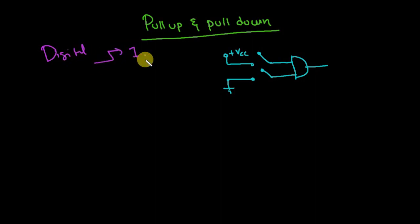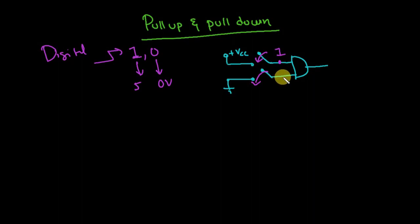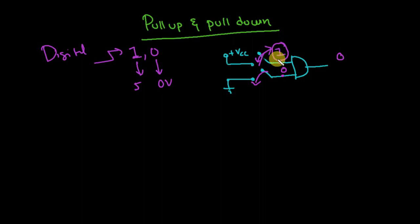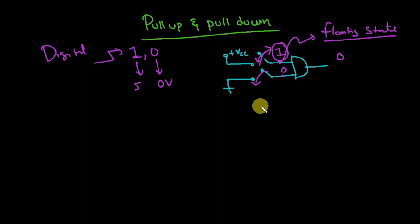Logic 1 represents 5 volts and logic 0 represents 0 volts. If I close this switch I get the value 1; if I close this switch I get the value 0. But if I open the switch, it is neither connected to ground nor to VCC — this state is known as a floating state. Floating means it is neither 1 nor 0; it can float between 0 to 5 volts at any voltage level.